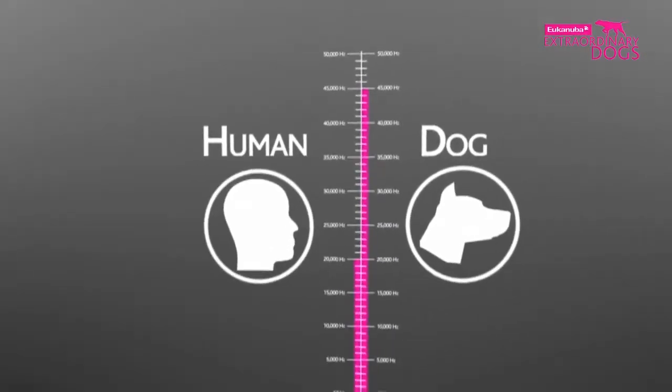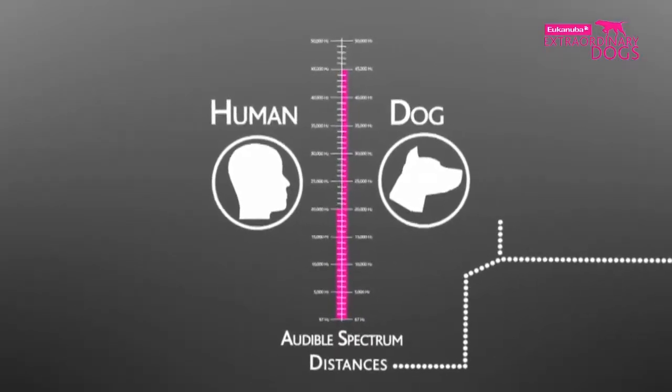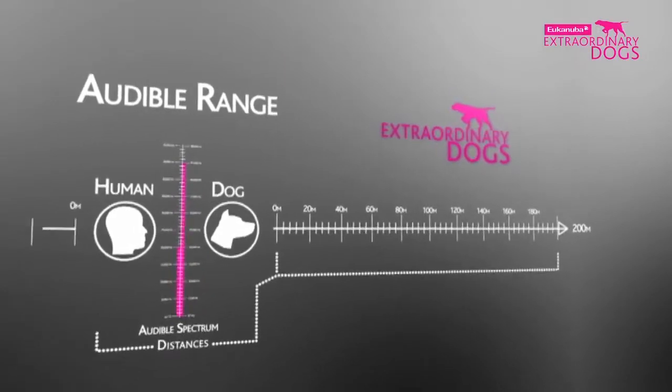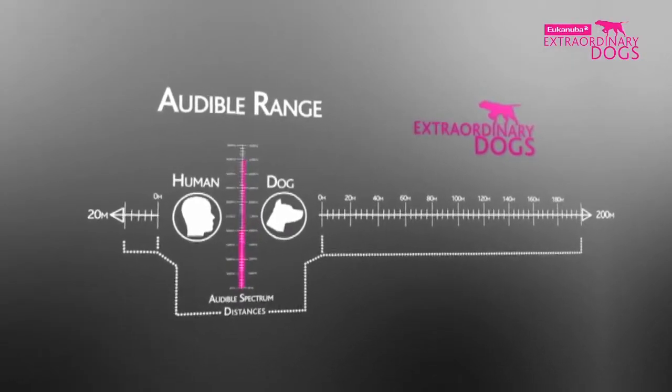Dogs can also determine the source and the exact location of a sound at distances of up to 200 meters, two whole football pitches away. A human finds it hard to work out the exact origin of a sound from much more than 20 meters.